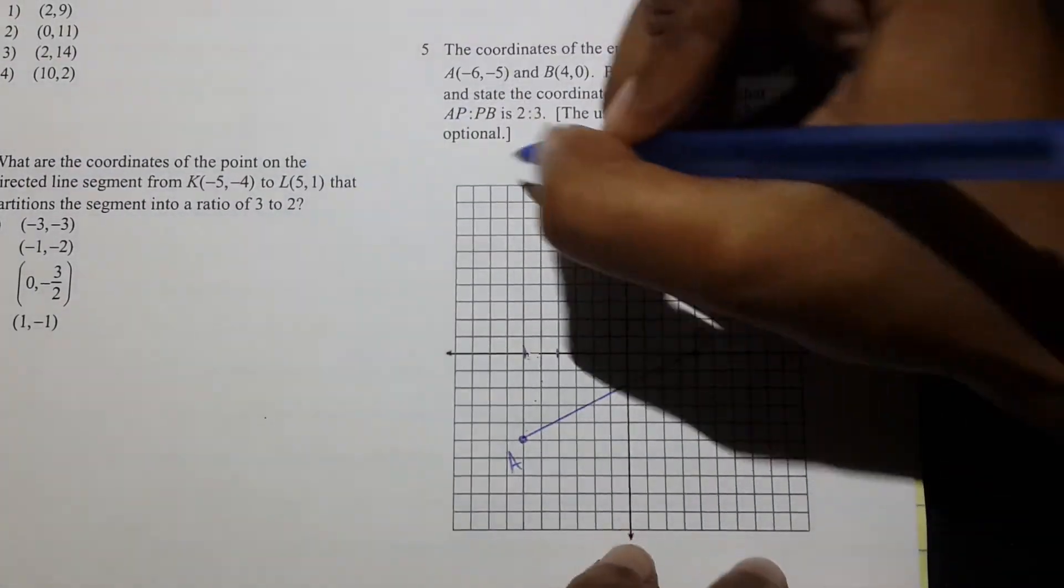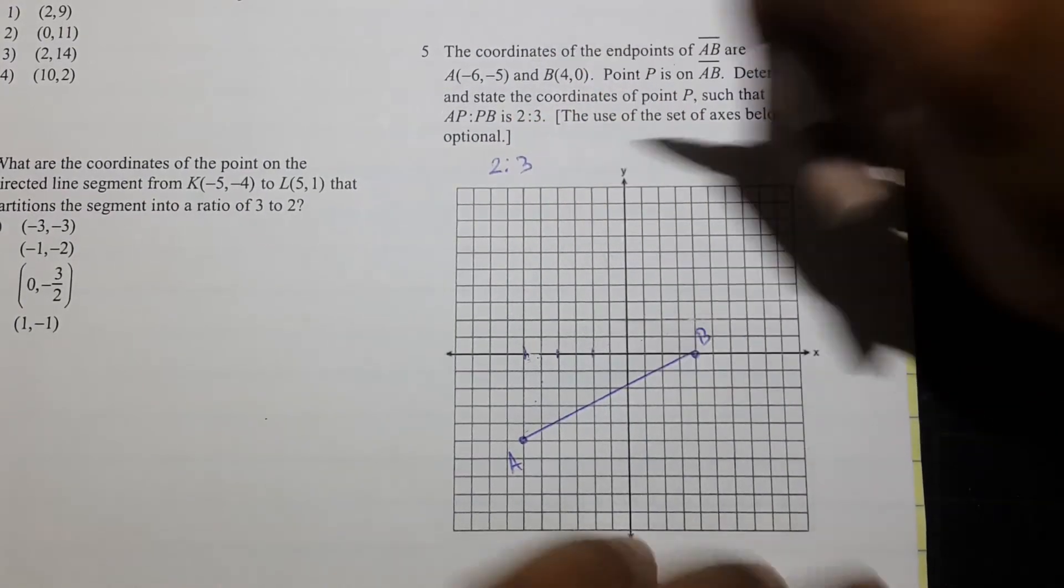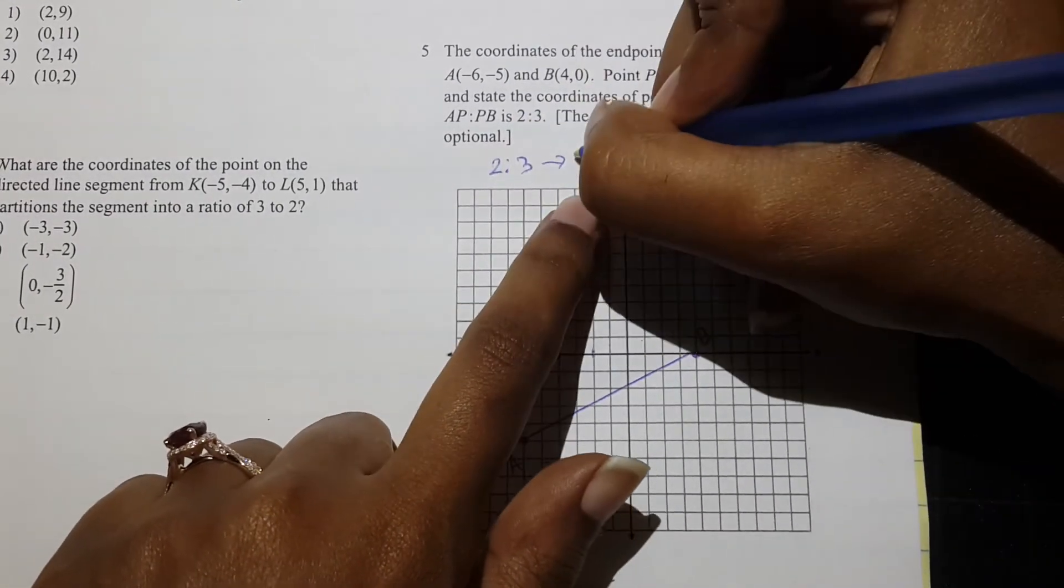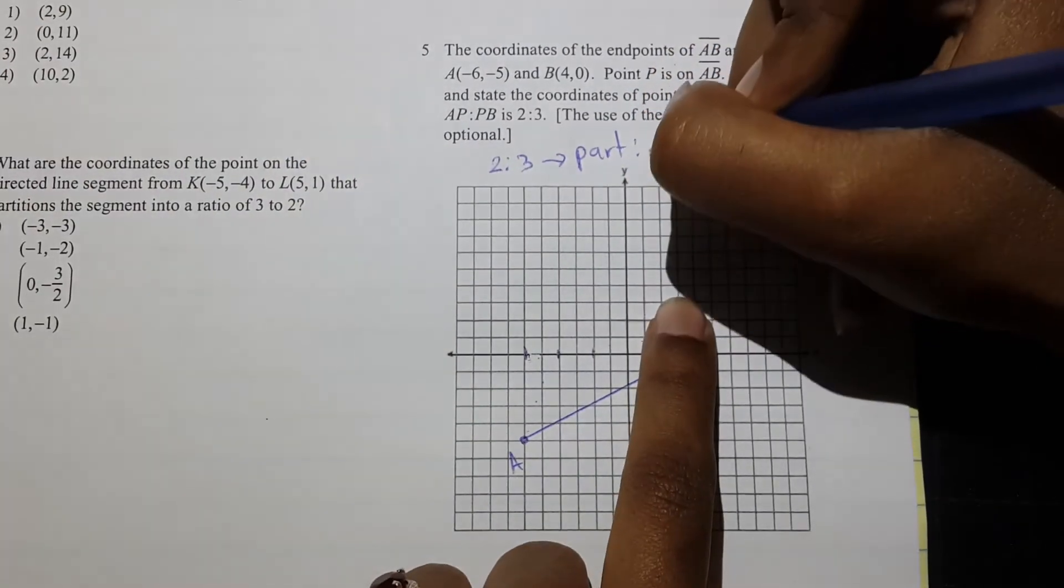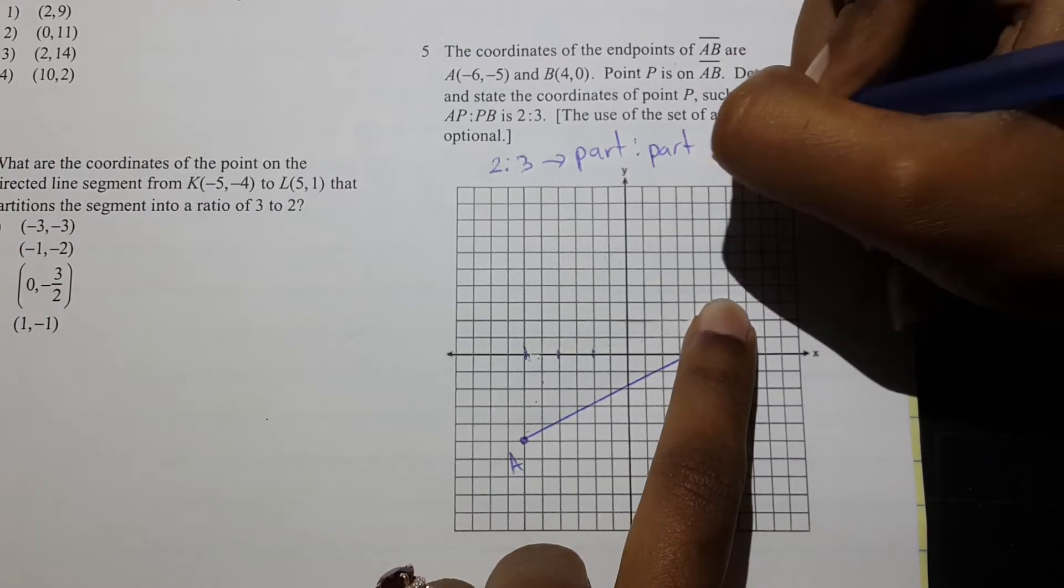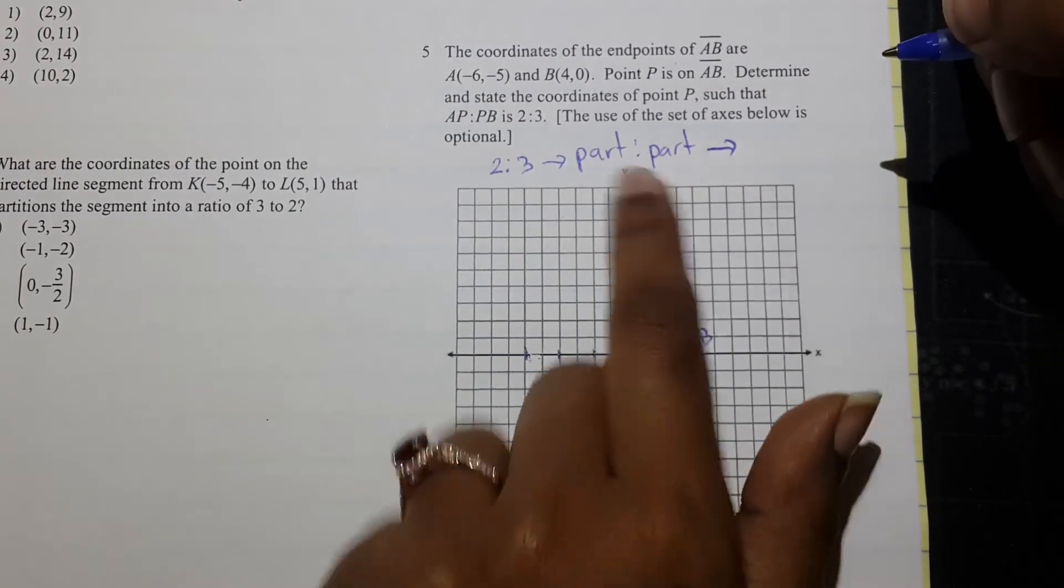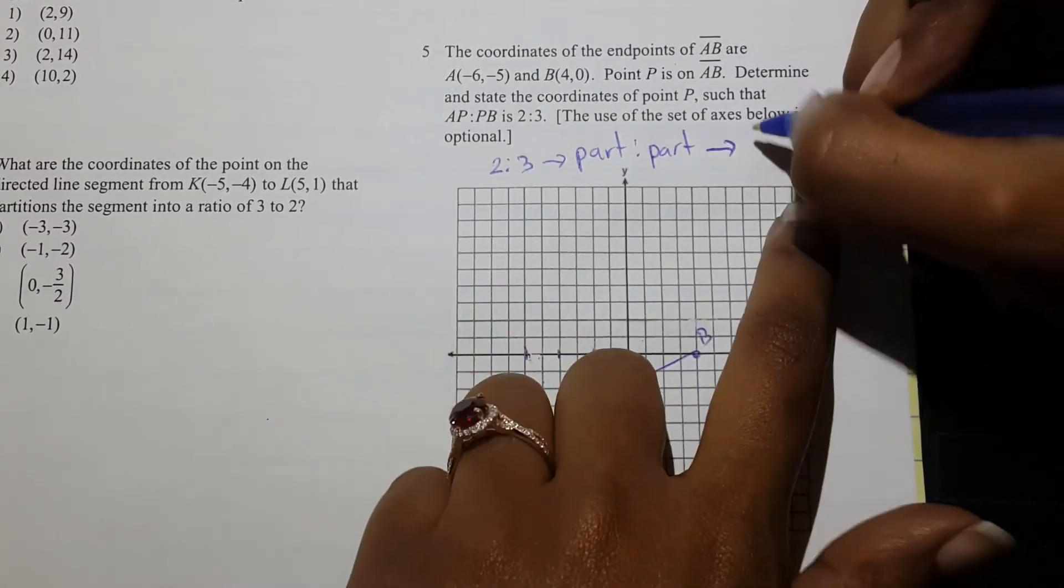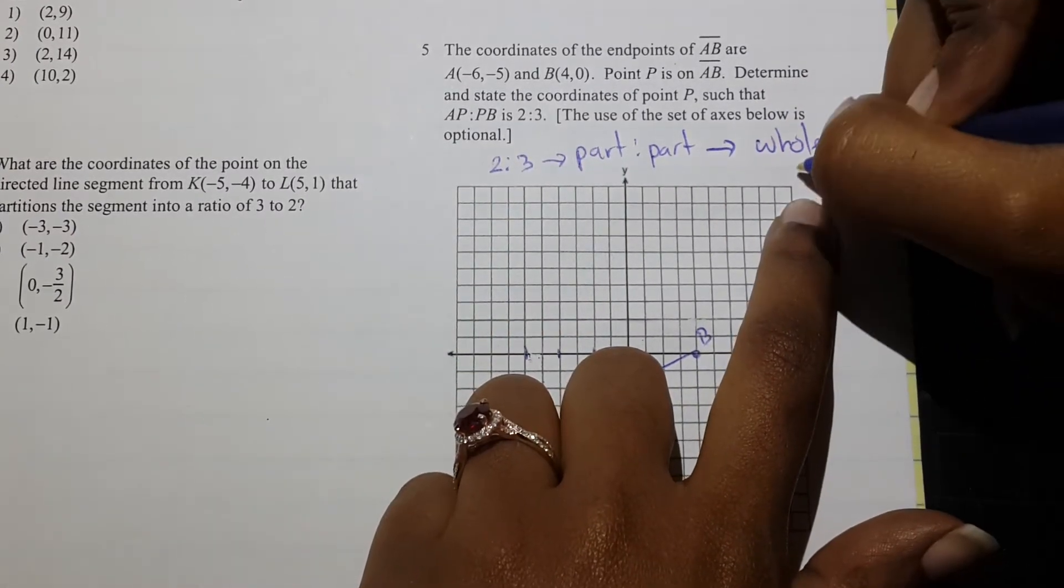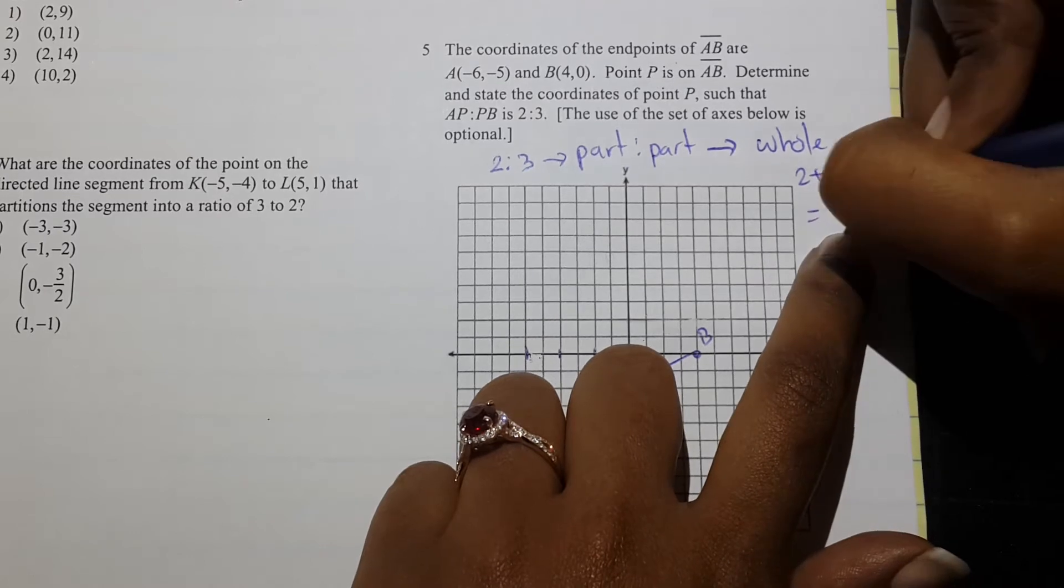Alright, so given that our ratio is 2 to 3, we want to look at this as a part-to-part, because that's what it is. The first part is twice something, the second part is 3 times something. Now using that part-to-part, we can find out what the whole is, and the way we do that is by adding the two parts. So we know that the whole is going to be 2 plus 3, which is 5.